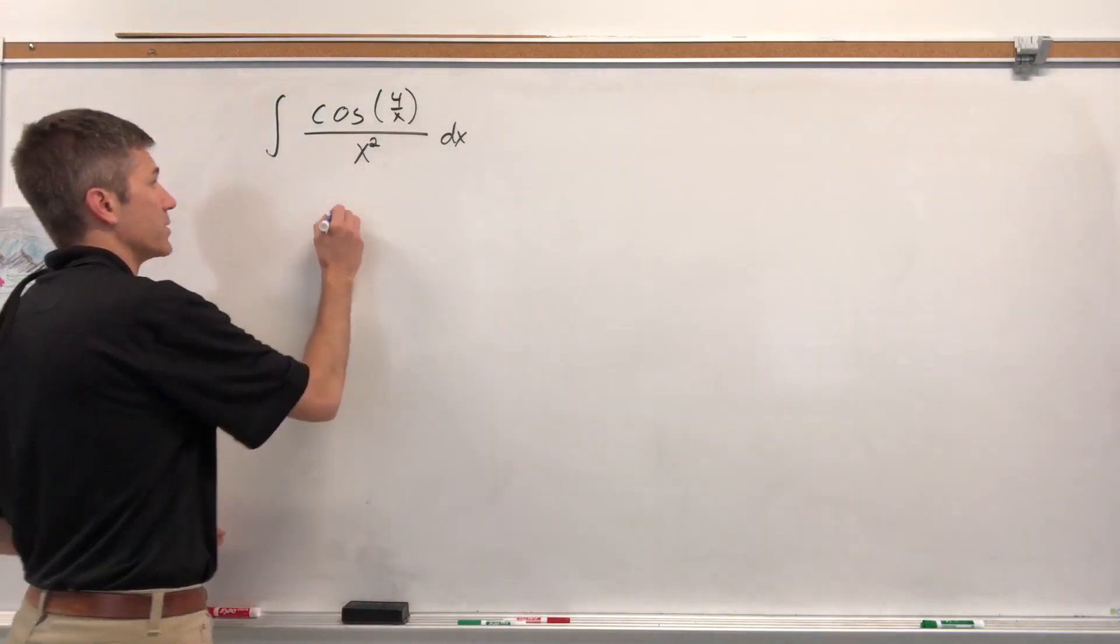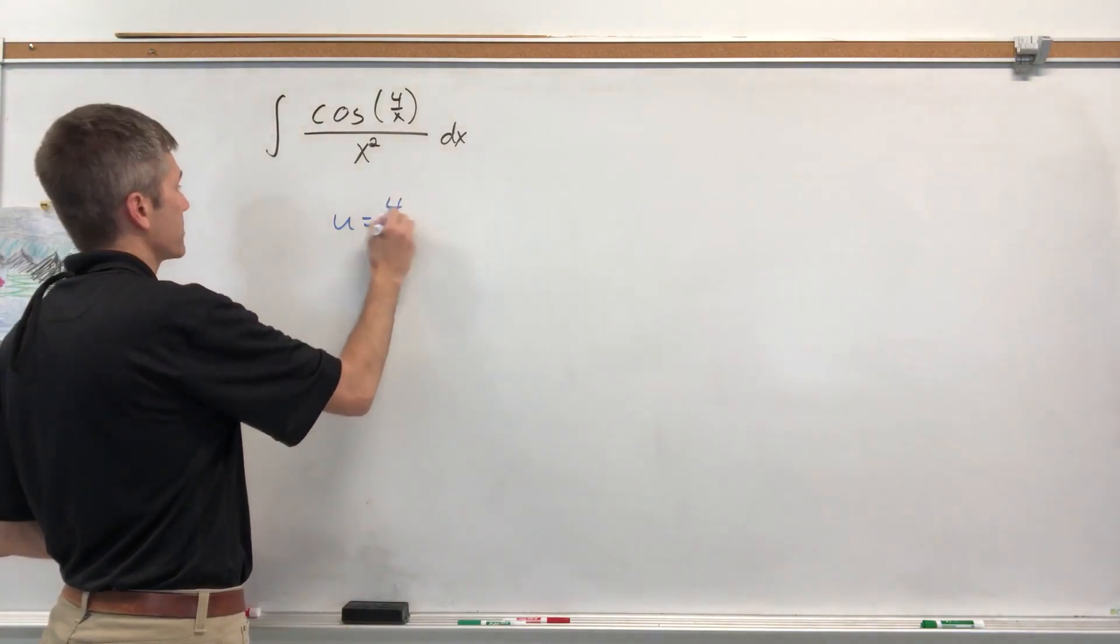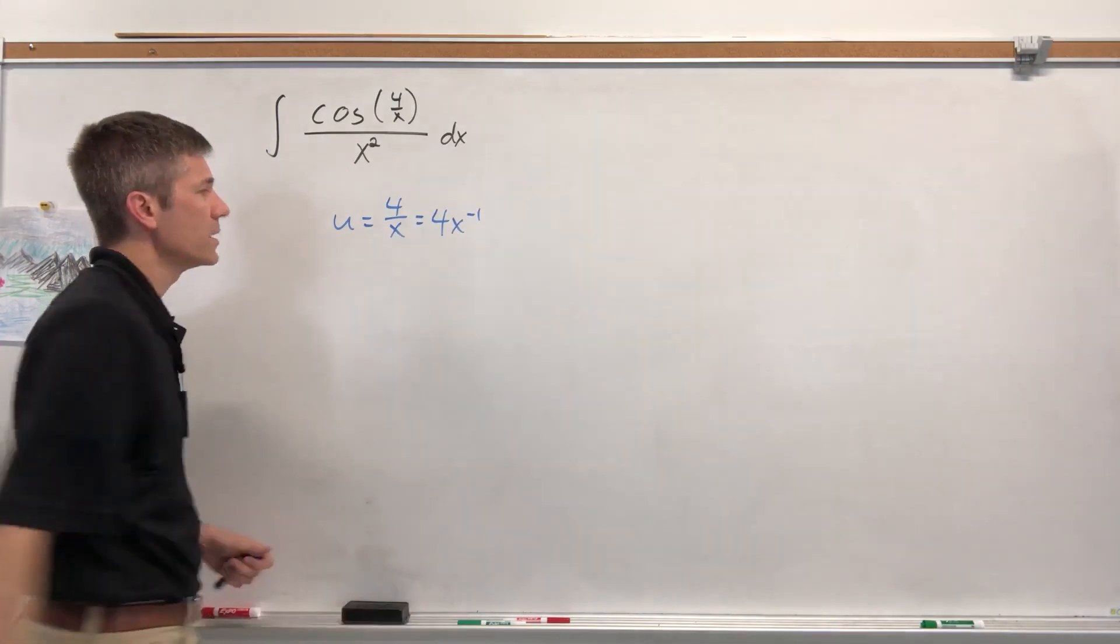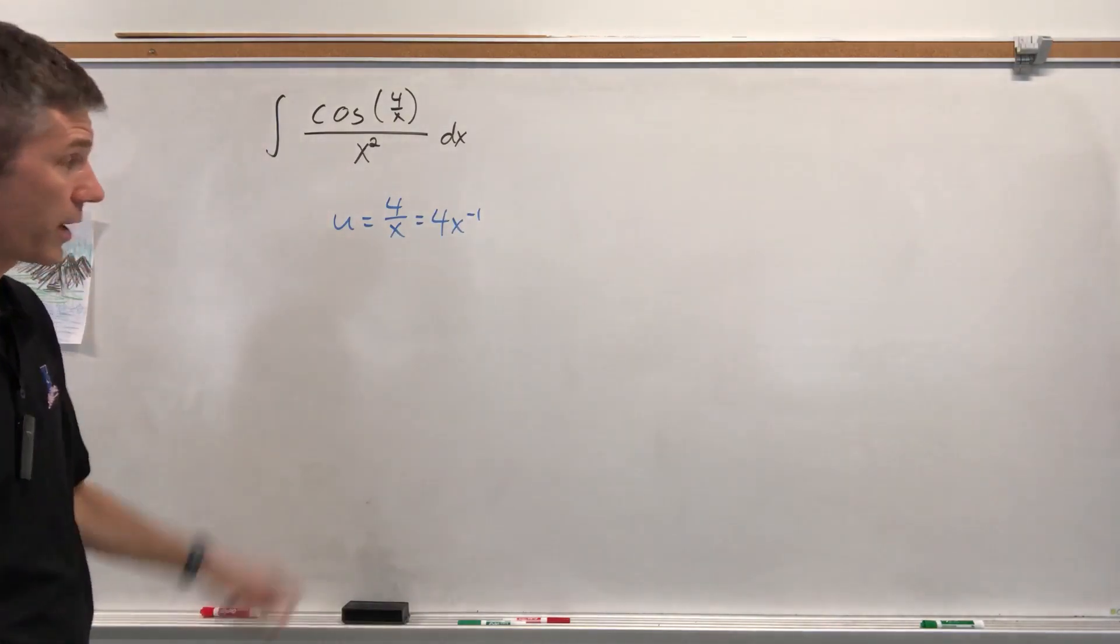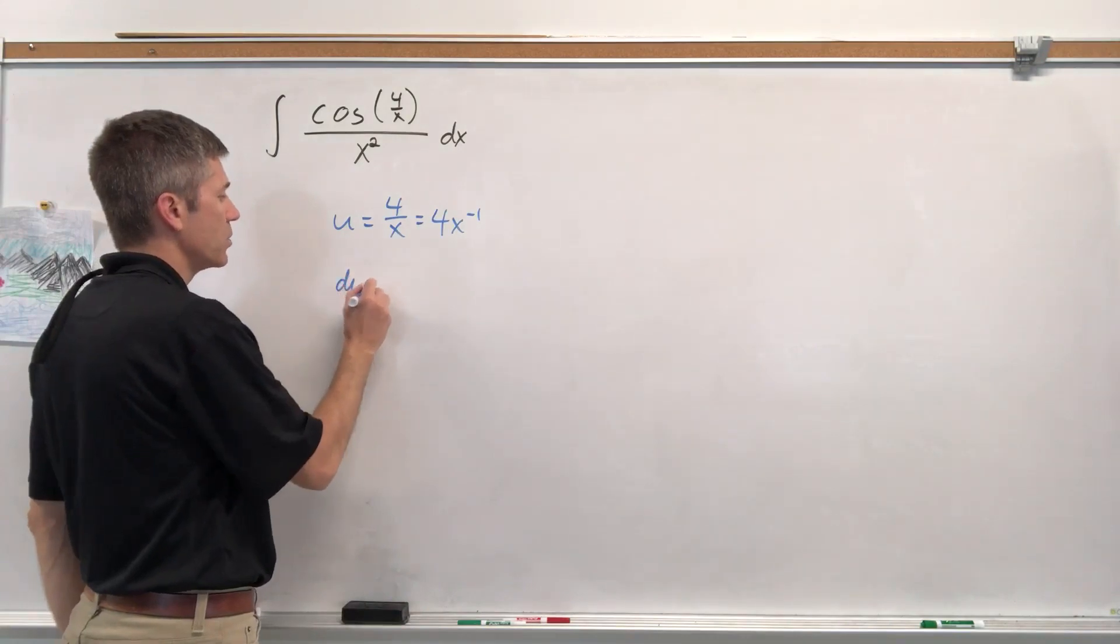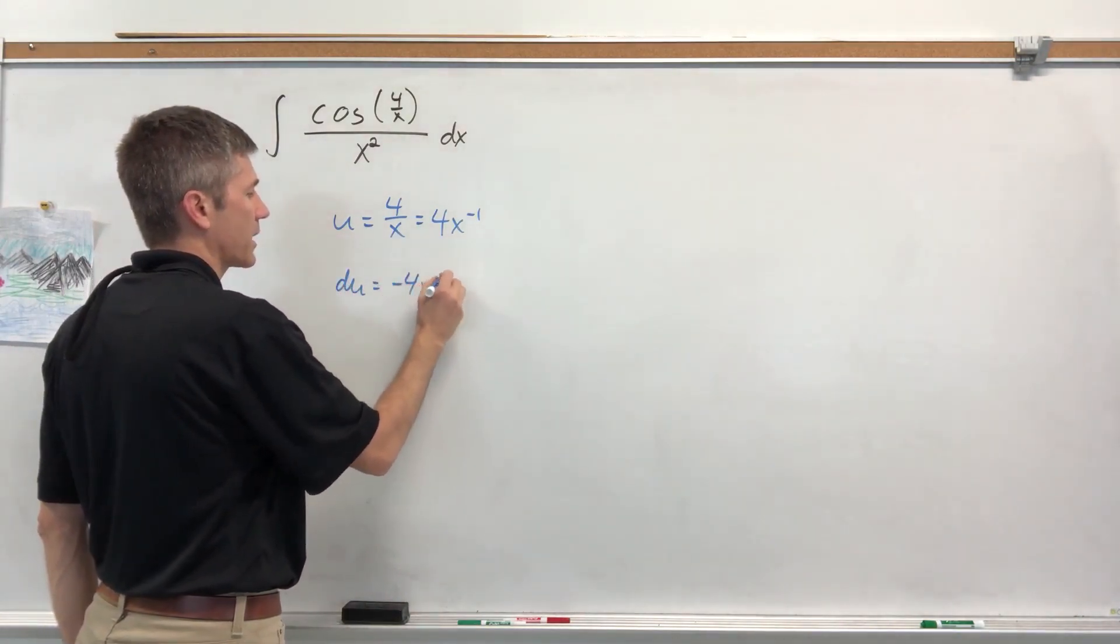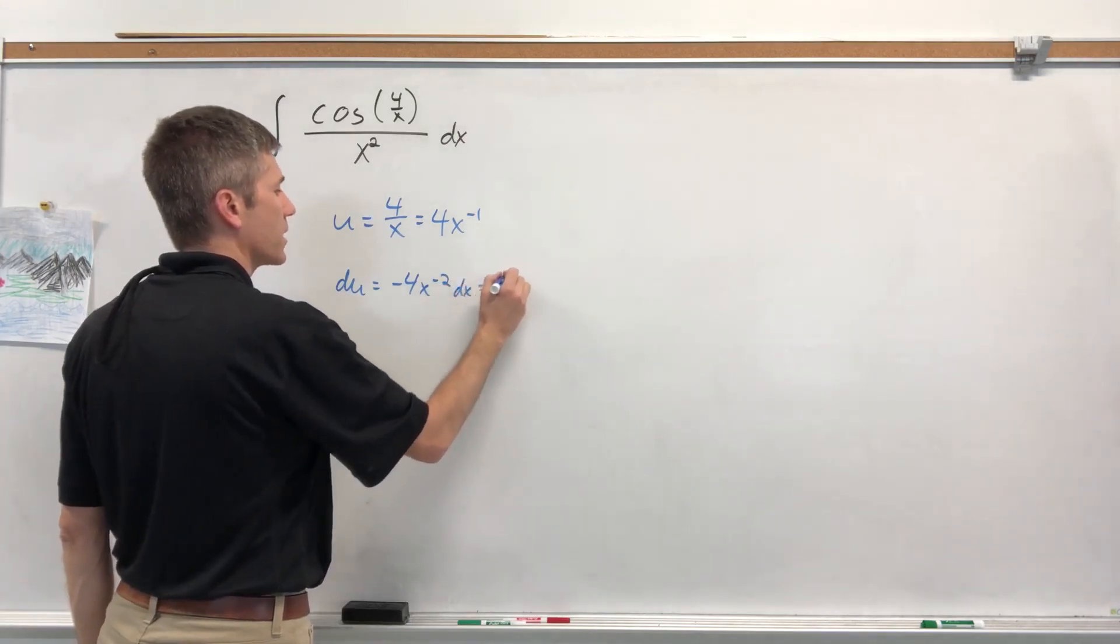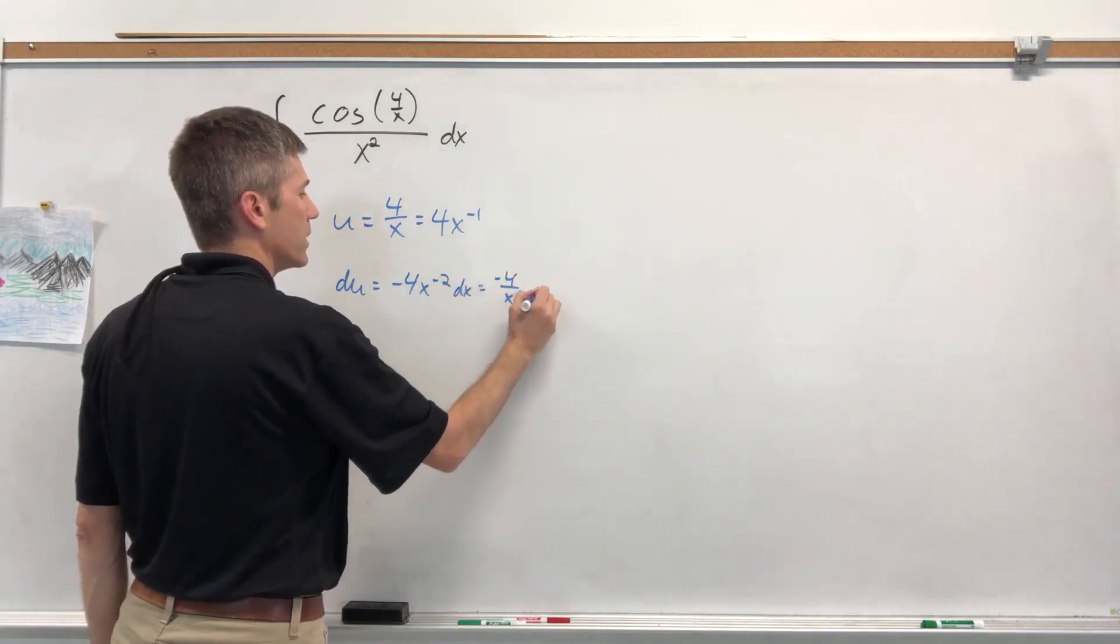4 over X is the inner function. What about the X squared in the denominator? Sometimes it just sort of comes out in the wash. Not like we're washing the problem. Let's do a little rewrite on it. So it's really 4X to the negative 1, just for the sake of finding an easy derivative. So DU equals negative 4X to the negative 2, DX.